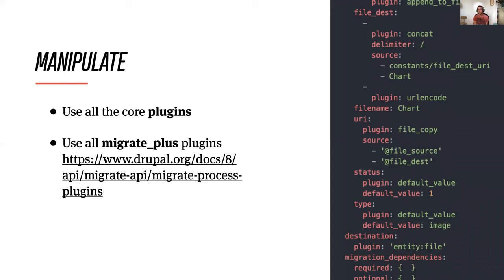Then comes the part of manipulation. We've done our best with the CSVs, but there's a limit to what spreadsheet functions can do — we're not connected to the system we're migrating into. For things that depend on other entities, the first step is all of the core plugins from the Migrate API. The link in this slide will take you to a page showing all of the core plugins and all of the Migrate Plus plugins for processing data as part of the YAML scripts.